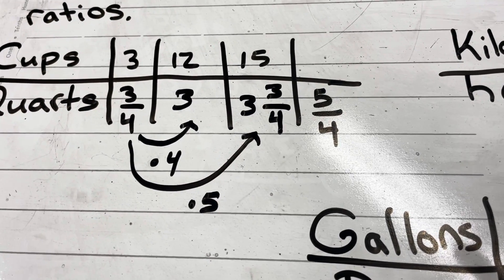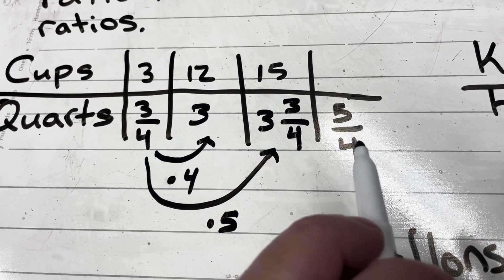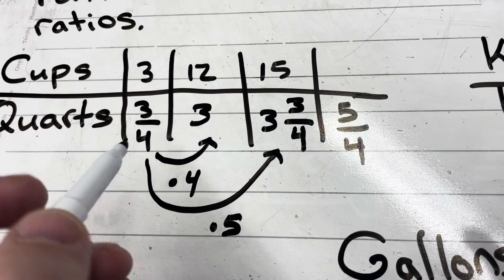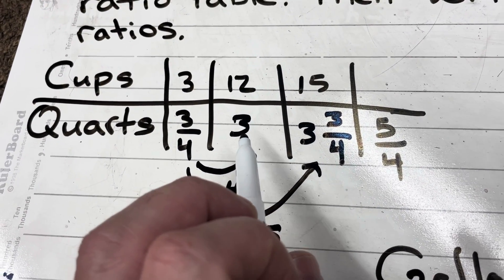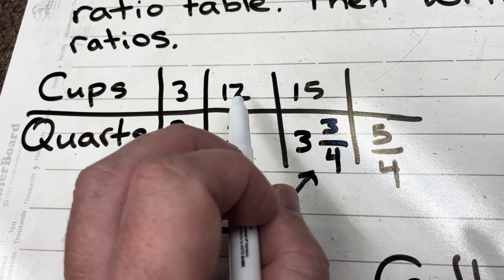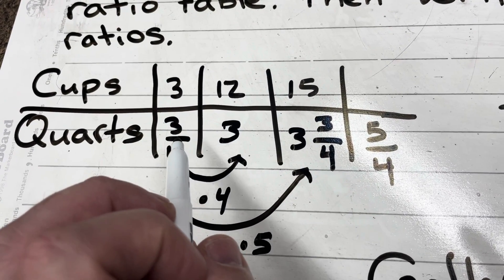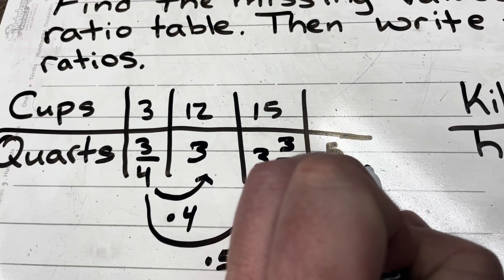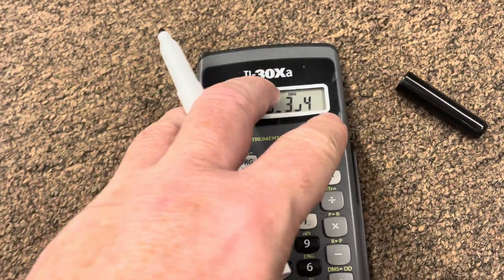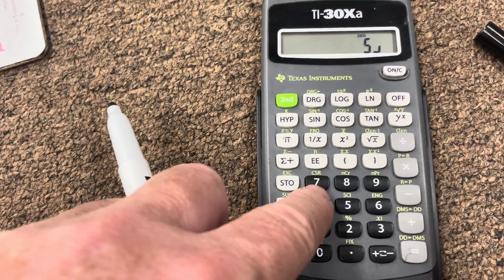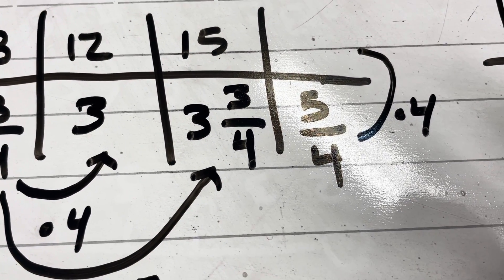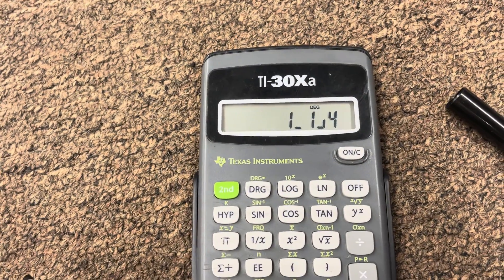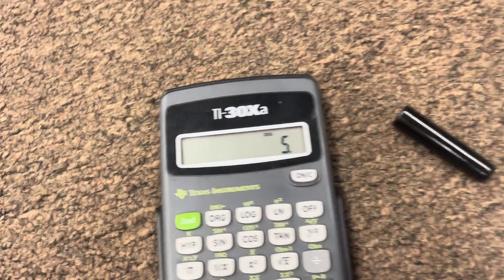Now I know the missing quarts value is 5/4 and I need to find the number of cups. It's not as easy to reverse from quarts to cups directly, but I can see that when I have 3 quarts I have 12 cups, and 3 times 4 equals 12. I need the same pattern: 5/4 times 4. On the calculator, 5 over 4 times 4 equals 5 — because 5/4 converts to 1 and 1/4, and 1 and 1/4 times 4 equals 5. So I fill in 5 cups.